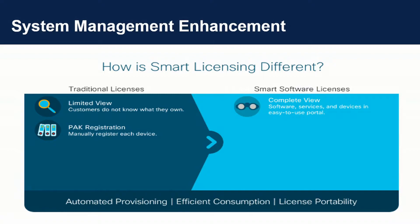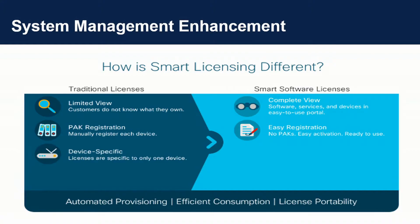With traditional licenses, you have PAC registration — you have to manually register each device. In smart licensing, you have easy registration, no PACs, easy activation, and ready-to-use devices. With traditional licenses, you have device-specific licensing — licenses are specific to only one device. With smart licensing, you have company-specific licensing and flexible licensing across devices.